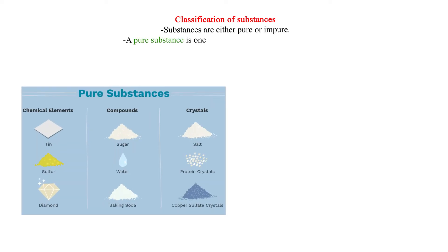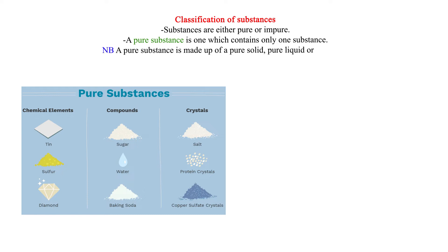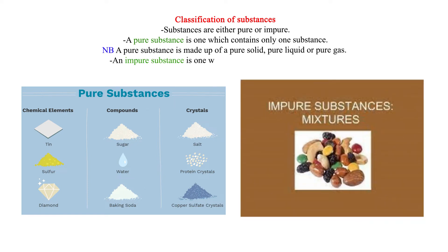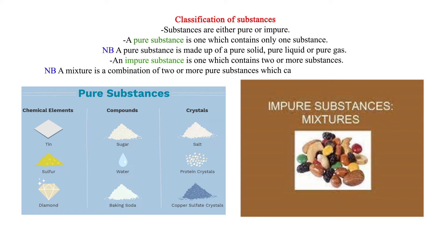Classification of substances: substances are either pure or impure. A pure substance is one which contains only one substance, made up of a pure solid, pure liquid, or pure gas. An impure substance is one which contains two or more substances. A mixture is a combination of two or more pure substances which can be separated by physical means.